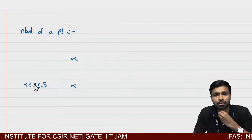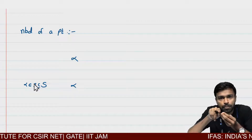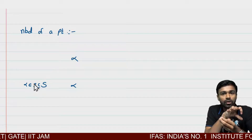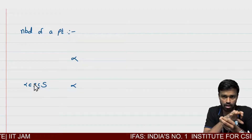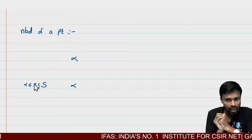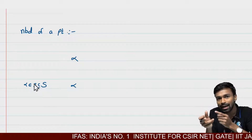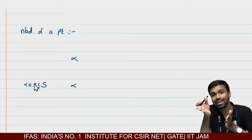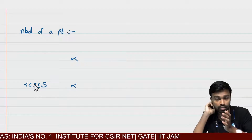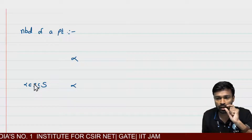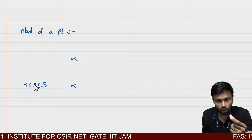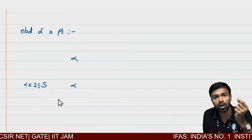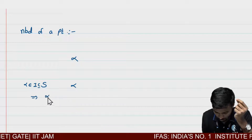If I am able to find some open interval I which is a subset of S, and that I contains alpha — meaning alpha is a member of that interval I and I is a subset of S — then and only then can I say that S will be a neighborhood of that point alpha. So clearly, I is a subset of S and alpha belongs to I, which implies that alpha belongs to S.